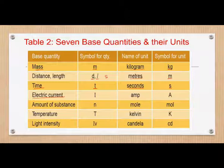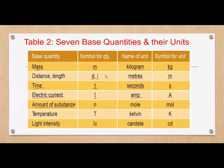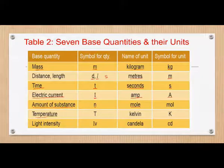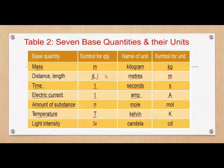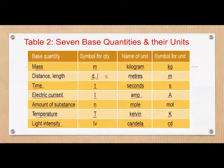Electric current has symbol I, unit ampere (shortened to amps), symbol A. Amount of substance is N, unit mole, symbol mol. Temperature is capital T, unit Kelvin, capital K. Light intensity has symbol Iv — lowercase i, lowercase b — and the unit is candela, symbol cd.